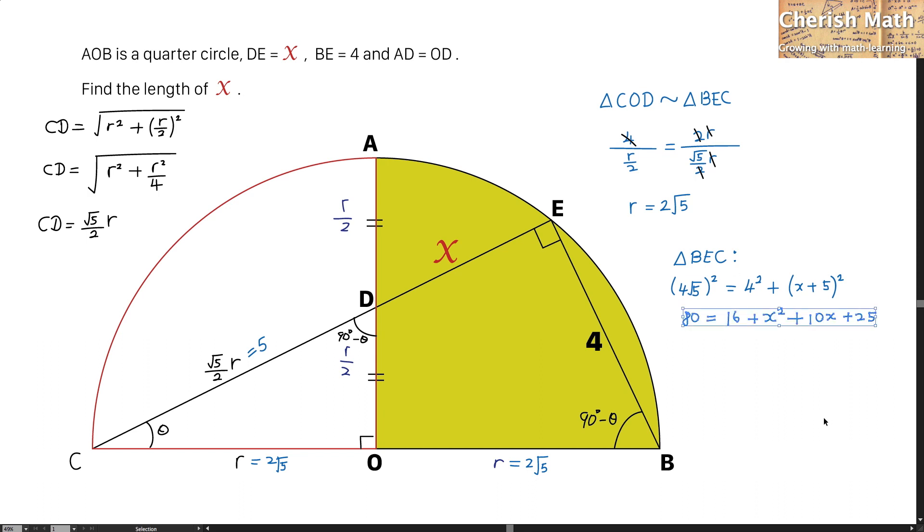Next, expanding it, this is what I get. Rearrange this equation. And now, I'm trying to factor it. The value of X that I'm getting here is X equal to negative 13 and X equal to 3.